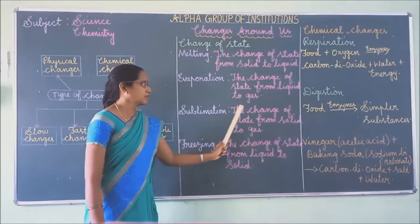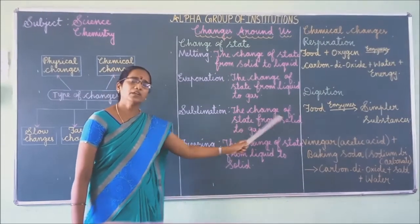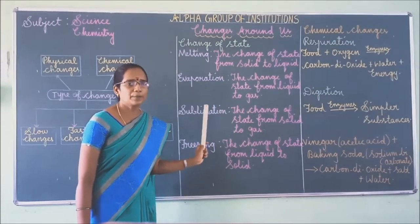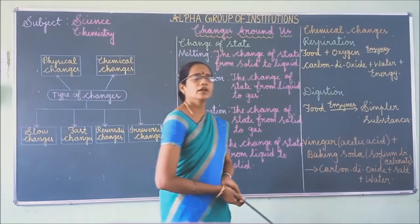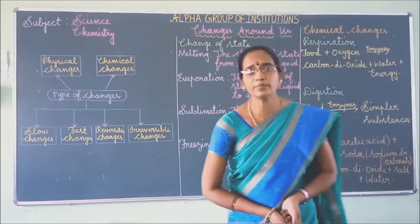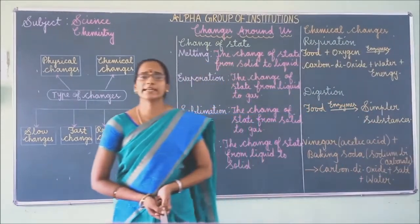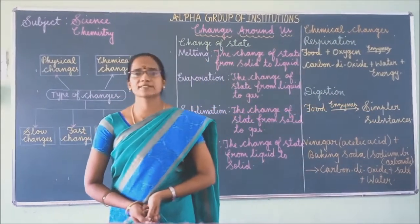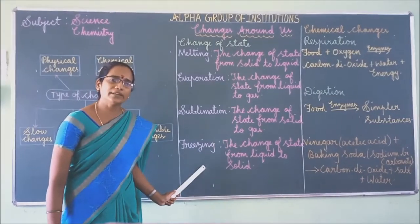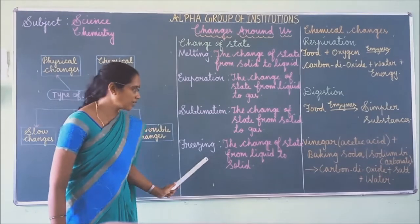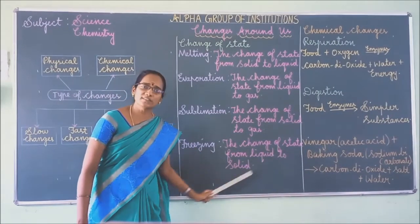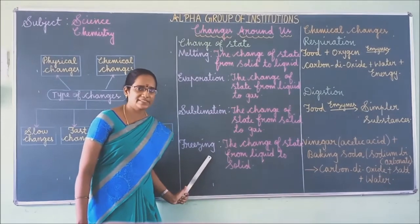Next is the sublimation process. The change of state from solid state to gaseous state is called the sublimation process. And the last one is freezing: the change of state from liquid state to solid state is called freezing.